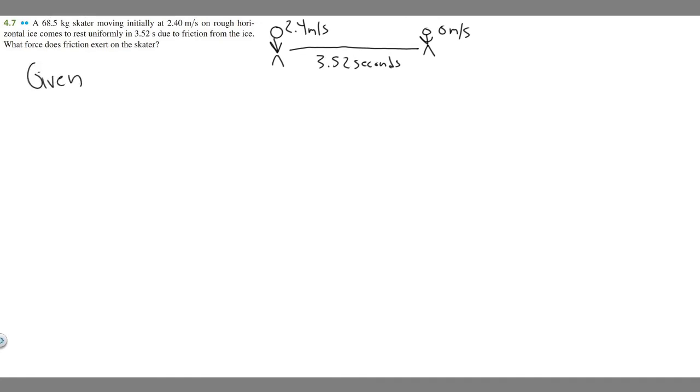Let's go ahead and write down what we're given. So we're told that the mass of our skater is going to be 68.5 kg. And you know kg is mass, so we know the mass.